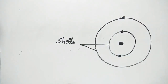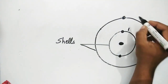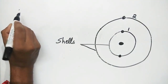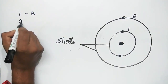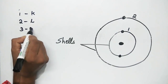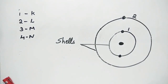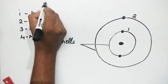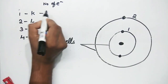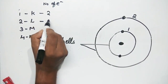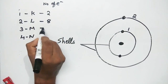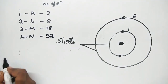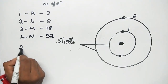Orbits are also called energy levels. The shells are numbered 1, 2, 3, 4 — or named K, L, M, and N. The maximum number of electrons per shell is given by 2n². K can hold 2 electrons, L can hold 8 electrons, M can hold 18 electrons, and N can hold 32 electrons. We use the equation 2n² to get these values.